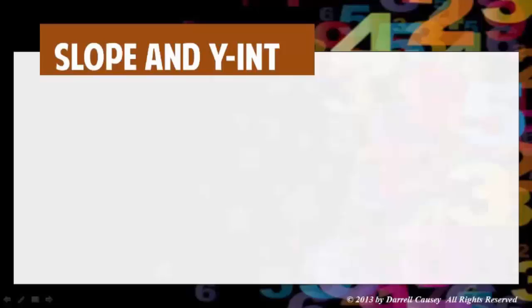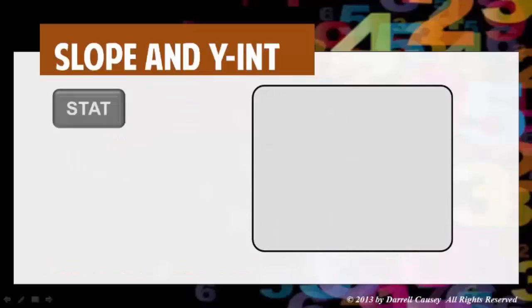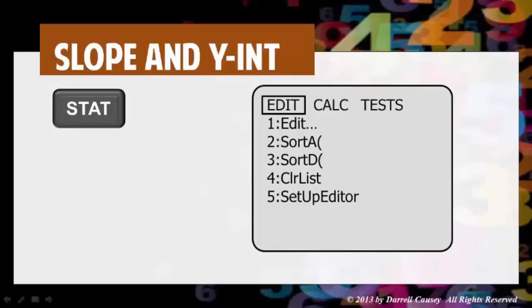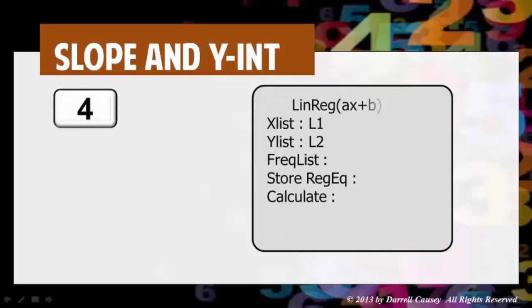Now, let's find our slope and our y-intercept. Second mode, clear. Make sure that we have everything off the screen and ready. Hit stat, move over to calc. And there you go. Use the arrow keys, go down to number 4. And you'll get this new menu. Go down to, using your arrow key, go down to store equation.